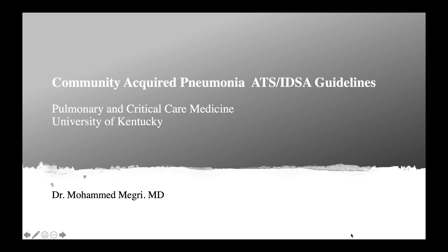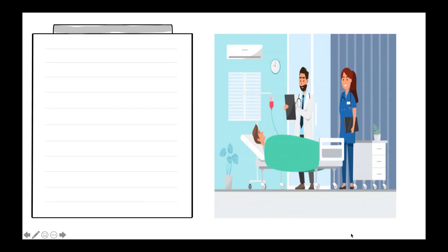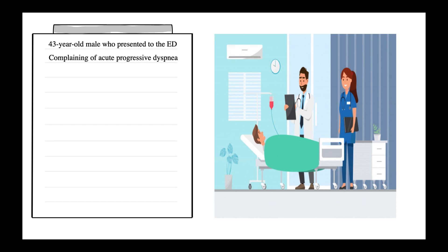We will apply these guidelines step by step on our patient. We received a call from the emergency department about a 43-year-old male who presented complaining of progressive dyspnea, productive cough, and chills for the last four days.